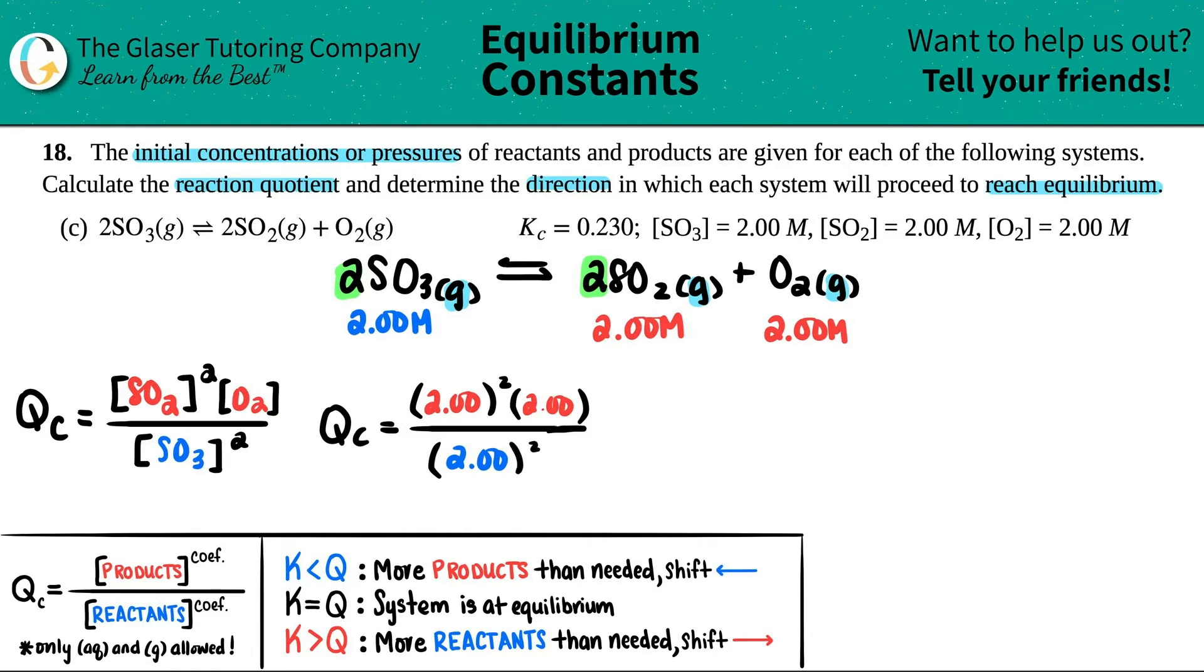Now, we could just do a quick little simplification here. The 2 squared and the 2 squared, you could just cancel these out because technically, they're the same on the top and the bottom. So, the QC would just be 2.00.